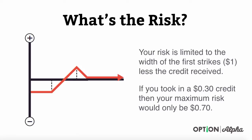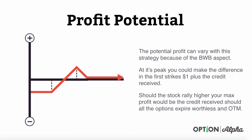With this trade, your risk is always limited to the width of the first strikes. In most cases, we do a dollar wide on that first strike less the credit that you received. So if you took in a $0.30 credit, your maximum risk would be $70 on the trade.